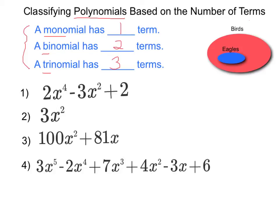Let's look at the four problems that you see below. Looking at the first problem, as I count the terms, there are one, two, three of them. So this one would be classified as a trinomial.